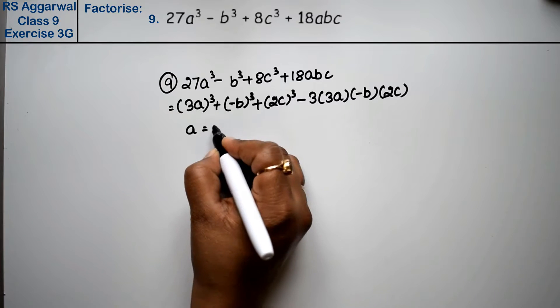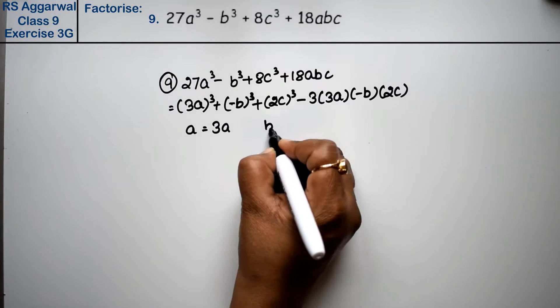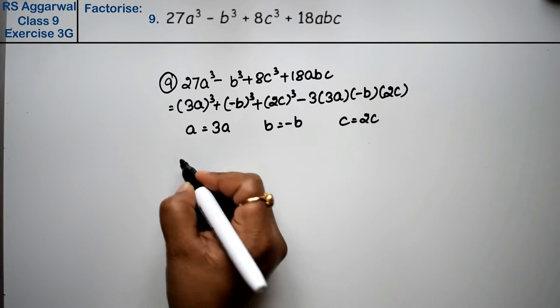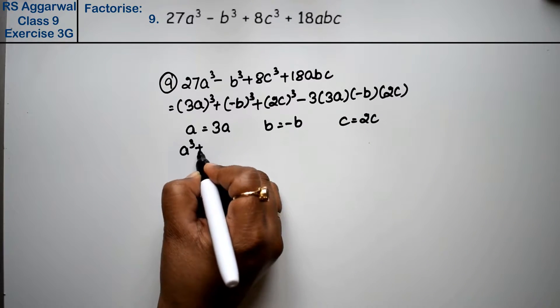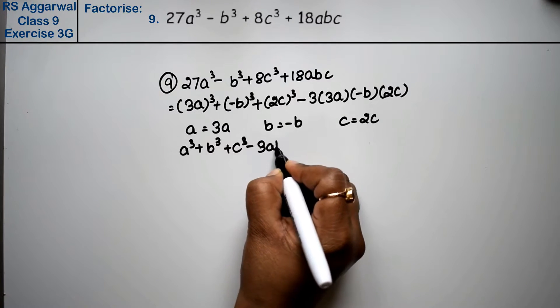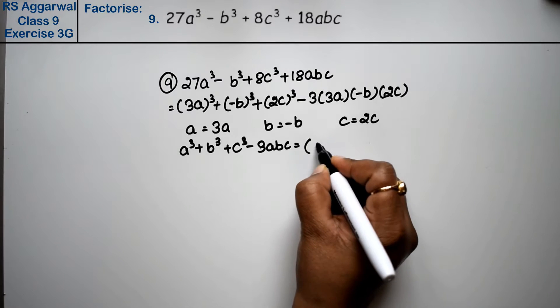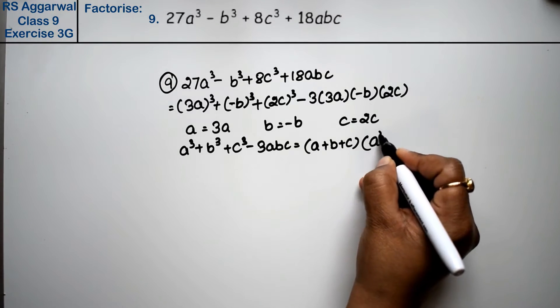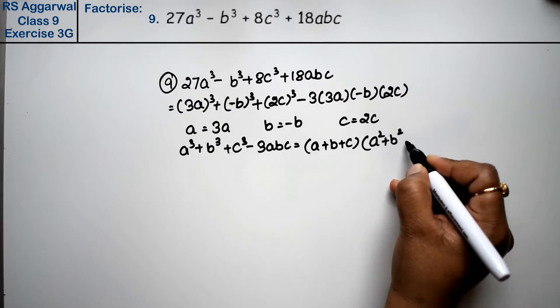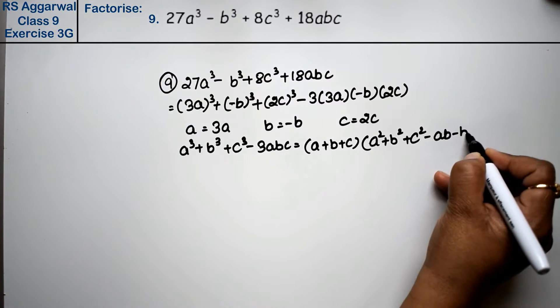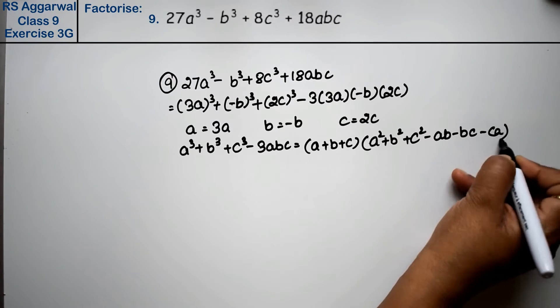So a becomes 3a, b becomes minus b, and c becomes 2c. a³ + b³ + c³ - 3abc, the formula is: (a + b + c)(a² + b² + c² - ab - bc - ca).